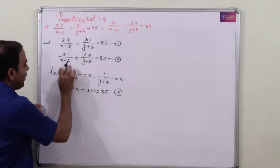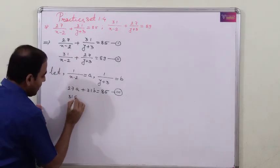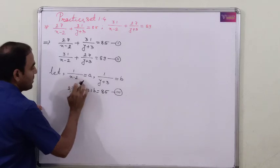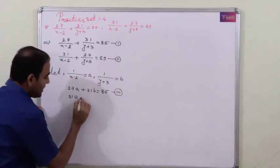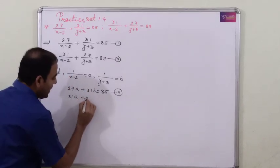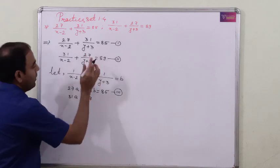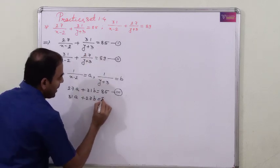Similarly, 31 upon (x minus 2) becomes 31a, because 1 upon (x minus 2) is 'a'. So the fourth equation is: 31a plus 27b equals 89.